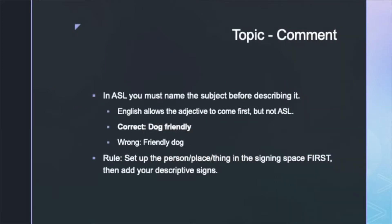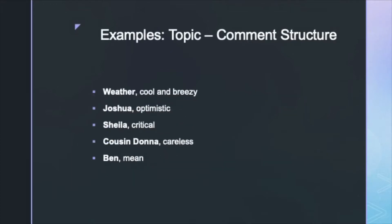ASL is a topic-comment language. In other words, you must name the subject before describing it. English allows the adjective to come first, but not in ASL. You must set up the person, place, or thing before you add signs describing it. I will demonstrate the following examples.